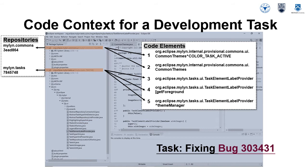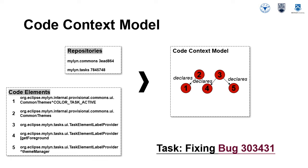the developer has access to repositories and five code elements. Note that some of the code elements may have been accessed multiple times during the task. Based on the information of accessed repositories and code elements, we could construct a code context model for this task. The code context model consists of five source code elements and their structural relations between those elements.